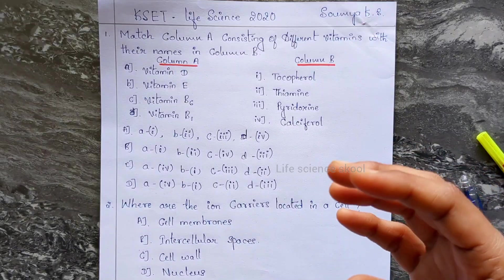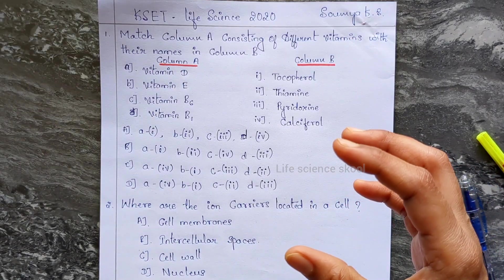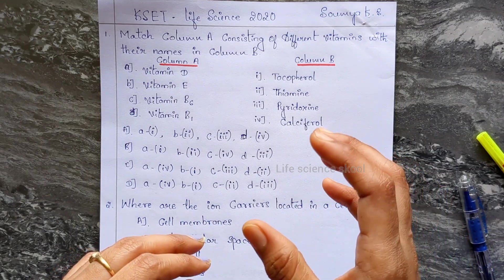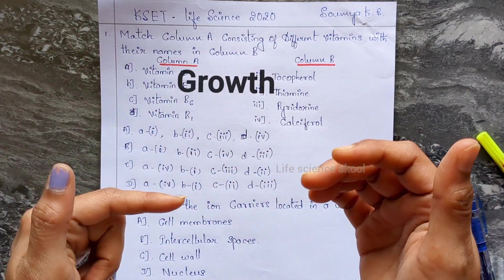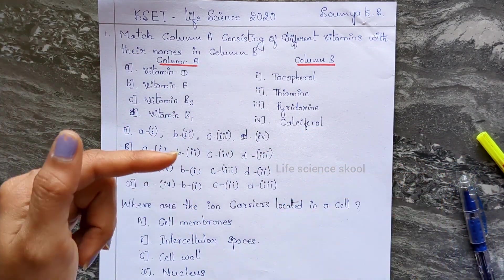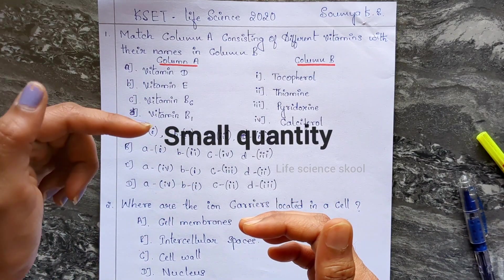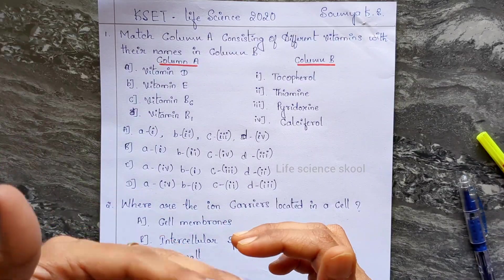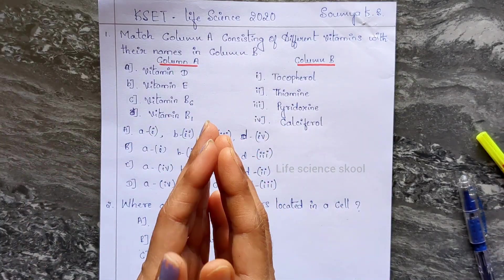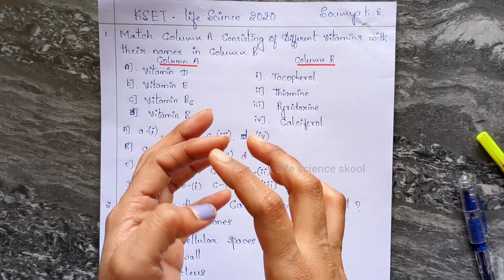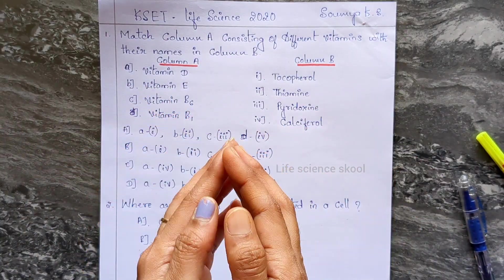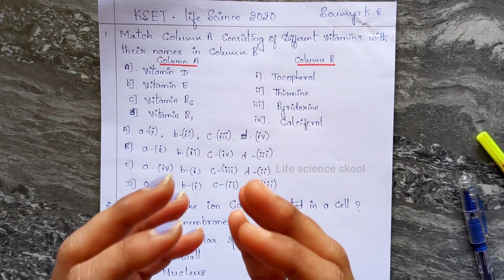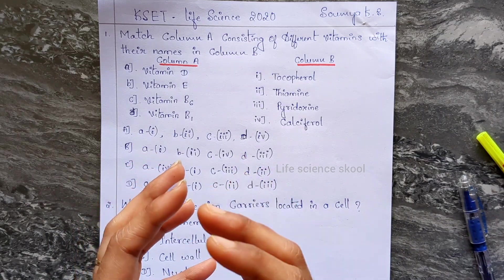Vitamins are nothing but a group of organic compounds which are essential for normal growth and nutrition. These are required in very small quantities in our body, and these are not prepared in our body — we should provide these vitamins in our diet. That's why eating a balanced diet is very important.